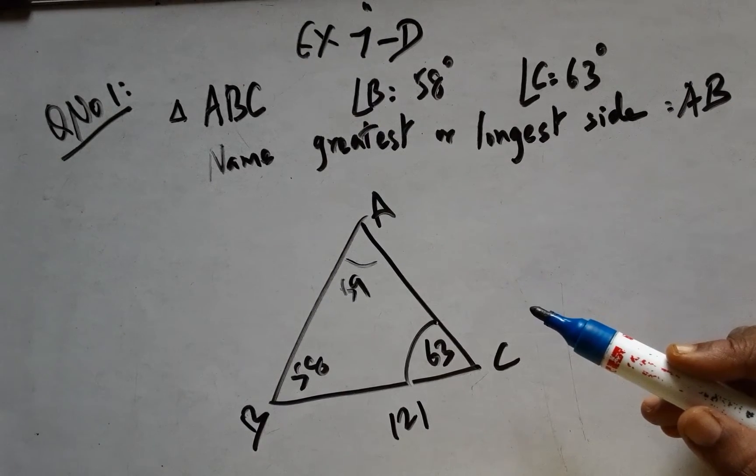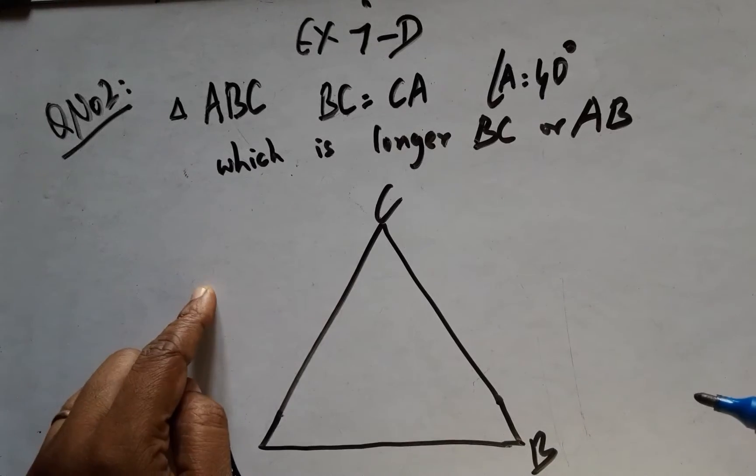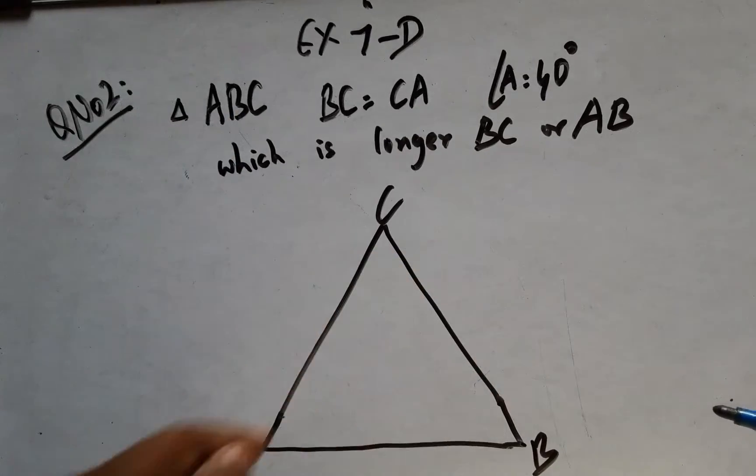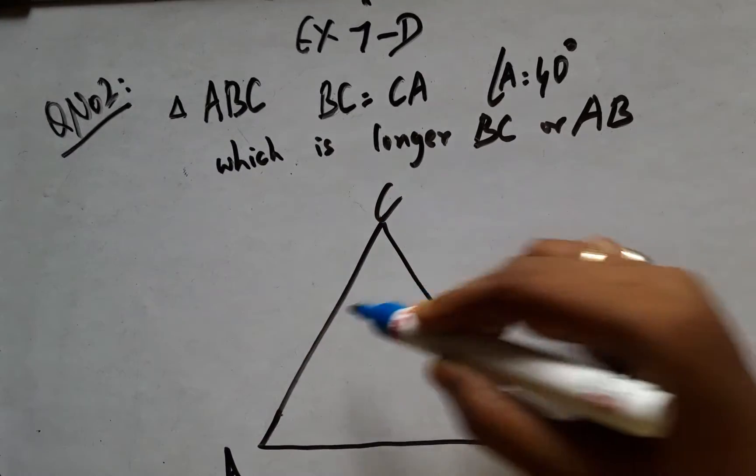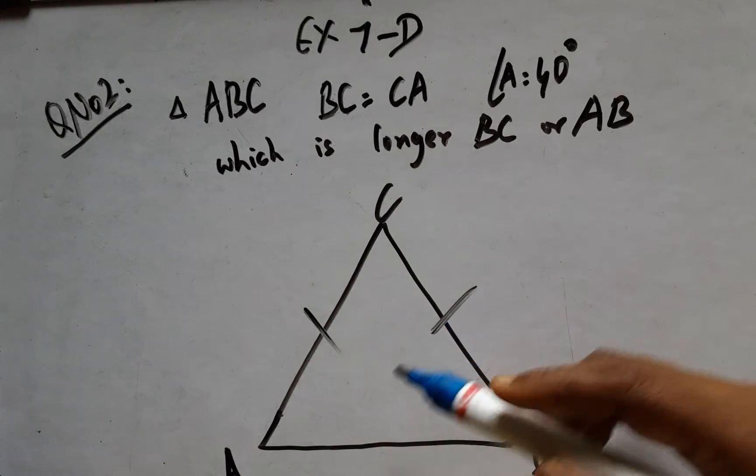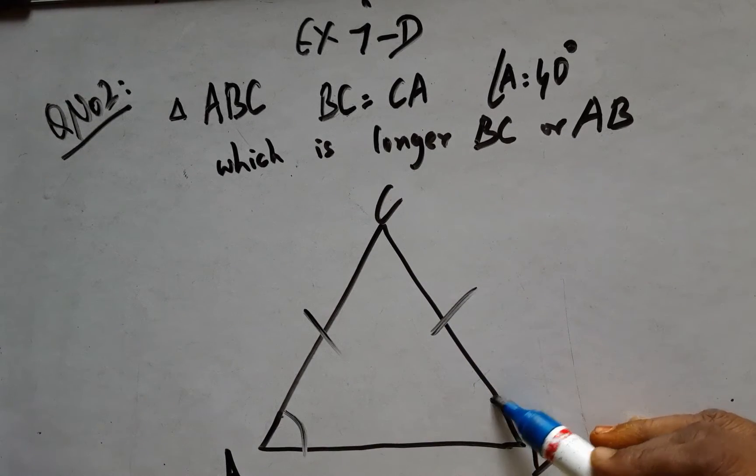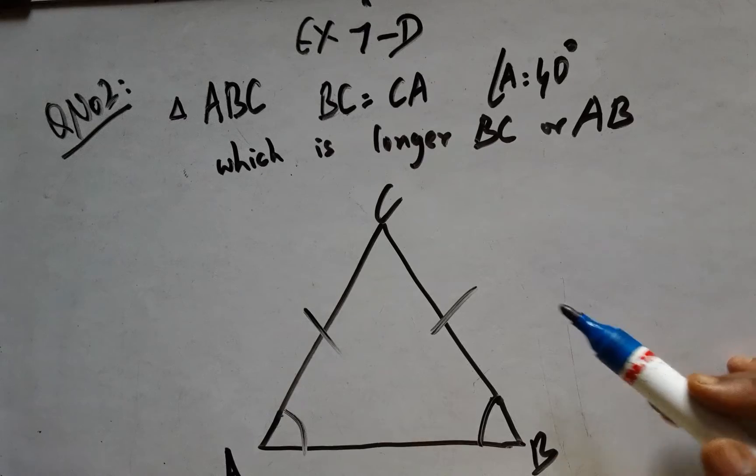Here comes the second question. Triangle ABC where BC equals CA has been given. That means the base angles are equal. It is an isosceles triangle.